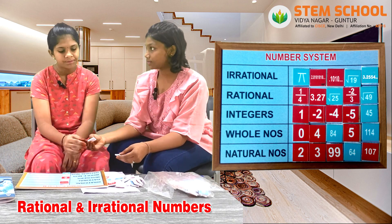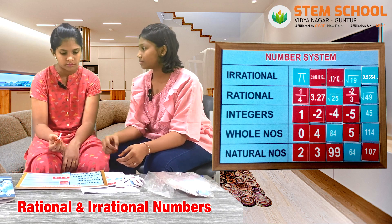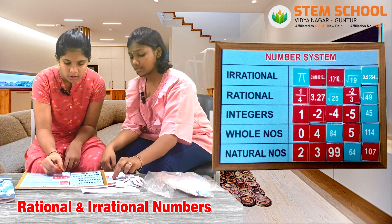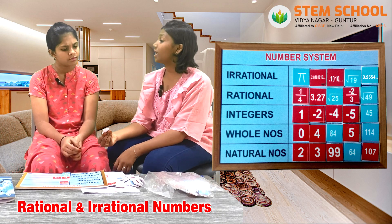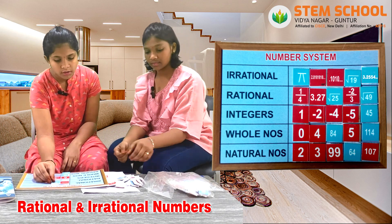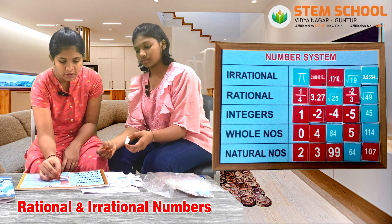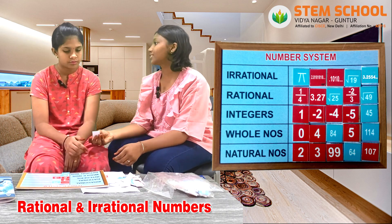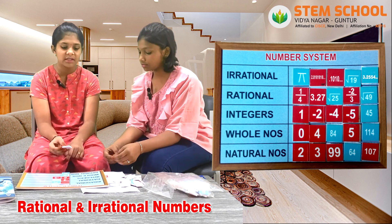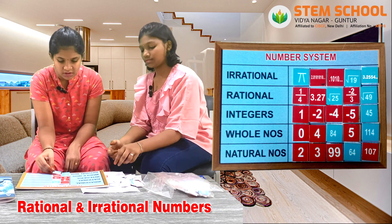Minus 3? Minus 3 is of course an integer. 84? 84 can be a whole number, integer as well as a natural number. What do you say about the value of pi? Pi is an irrational number. Good. Minus 2 by 3? Minus 2 by 3 is of course a rational number. 1, 0, 7? That can be any of the three — integers, whole numbers and natural numbers. 45? 45 can be a natural number.